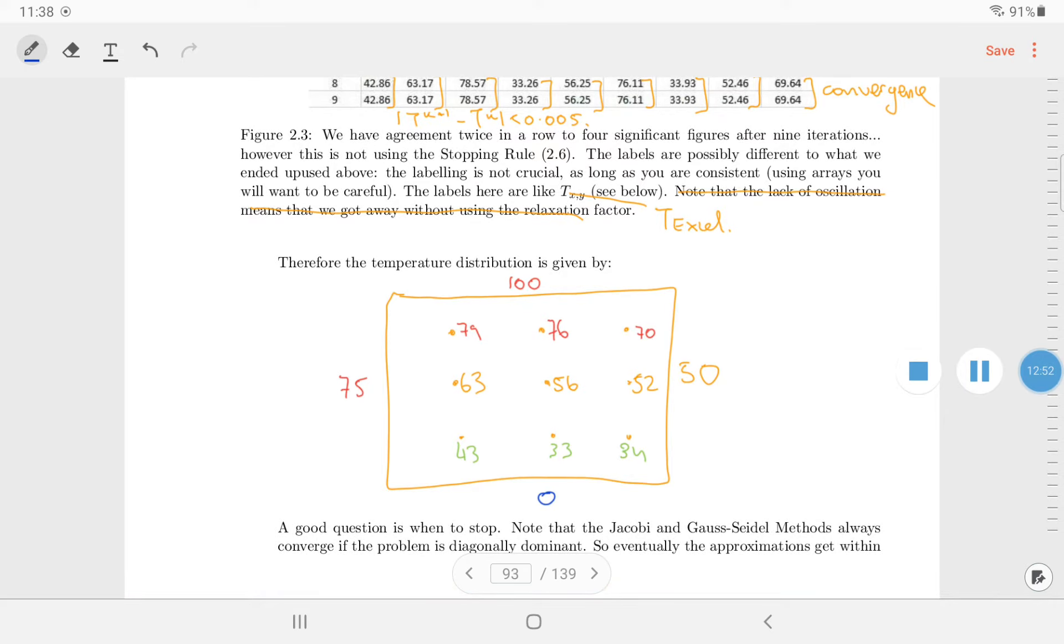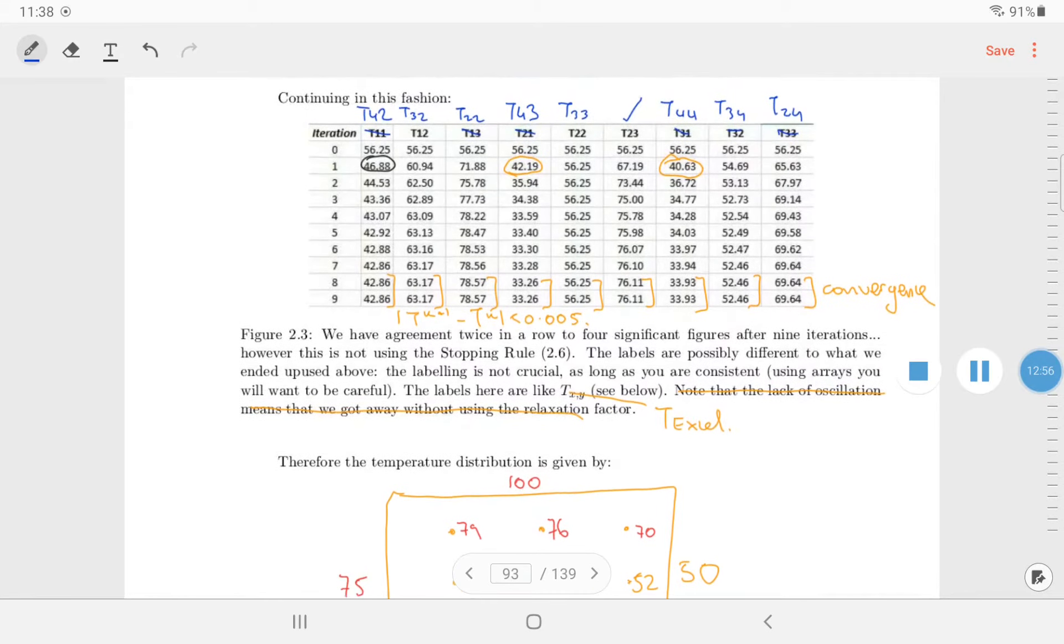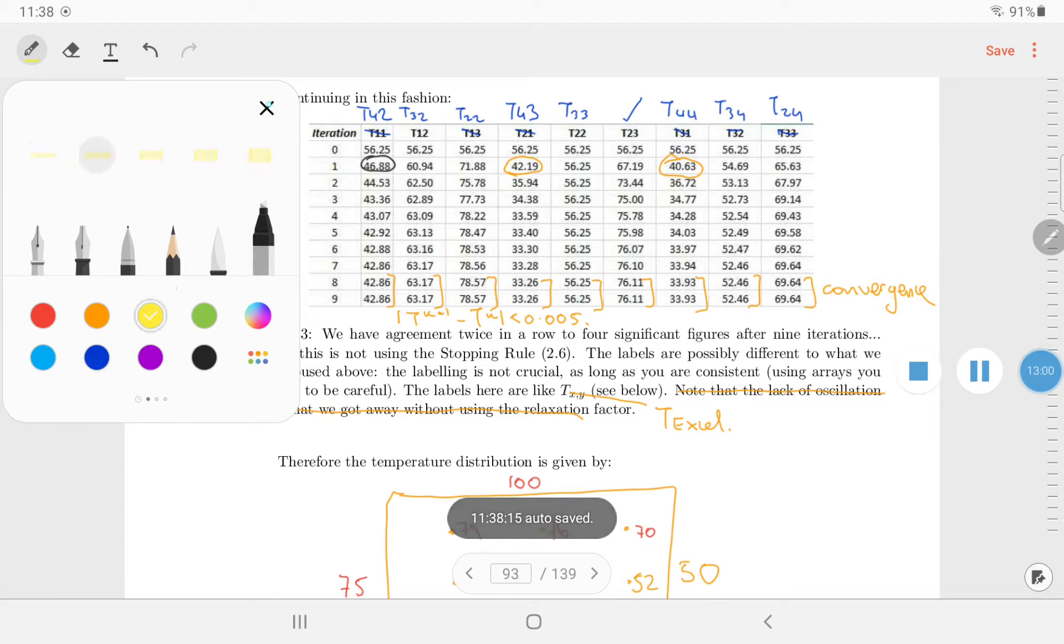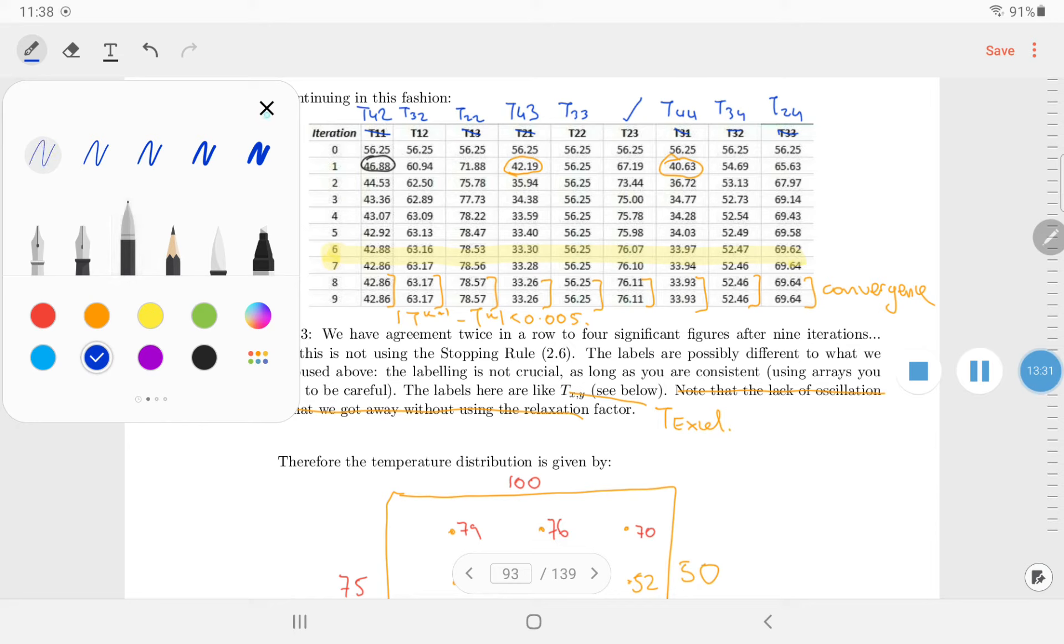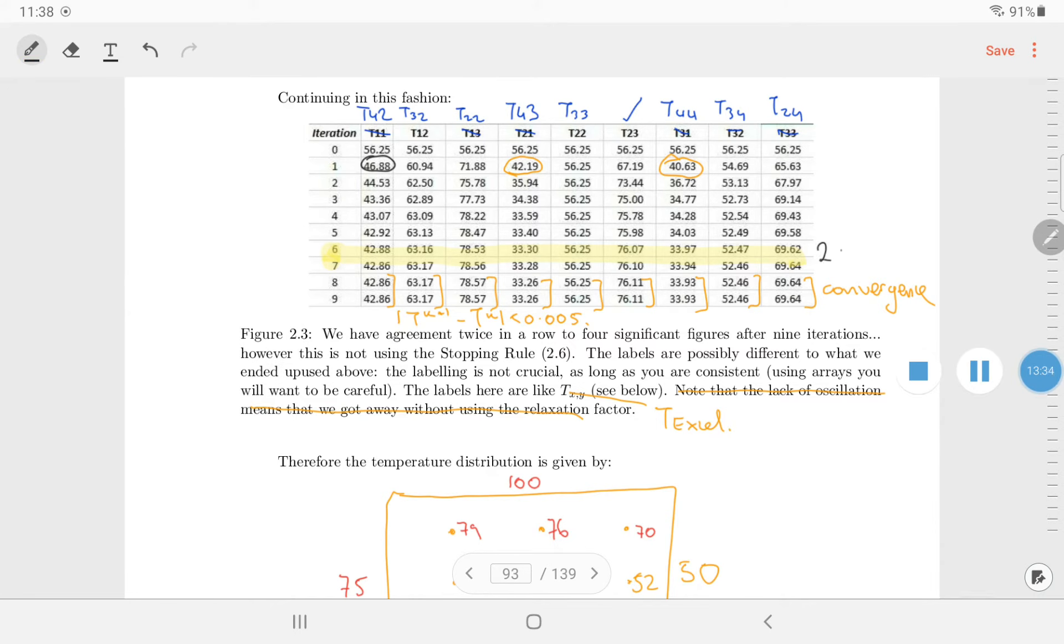Now a good question is when to stop. So that was kind of getting it correct to four significant figures. Could we have stopped earlier? And would have that caused an issue? So for example, when did we get agreement to two significant figures for all of them? So I'm looking across, I'm looking at iterations four to five. No, five to six. No, six to seven. So this is when we got convergence to two significant figures. Two significant figures. I'd have to say it looks like it is the case. So yes, for all of them.